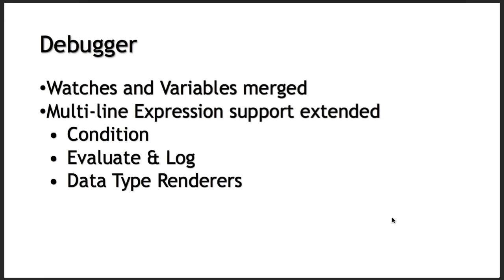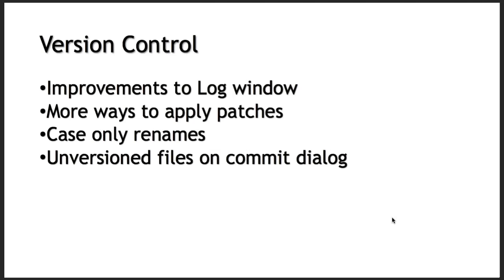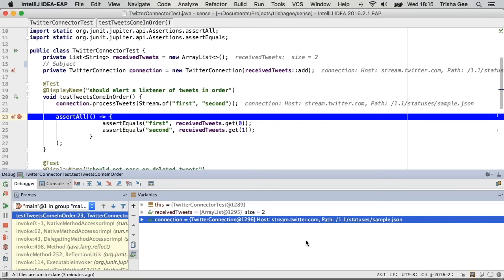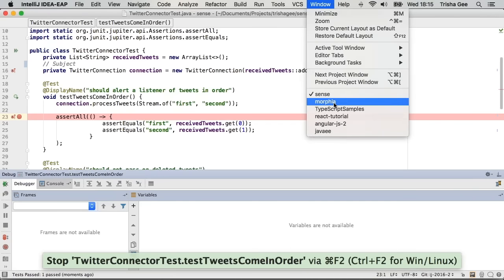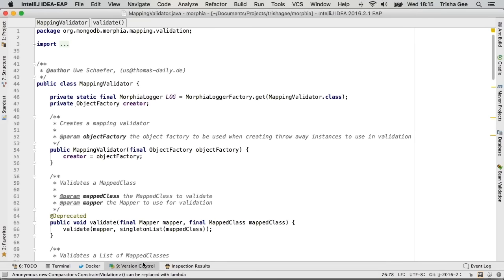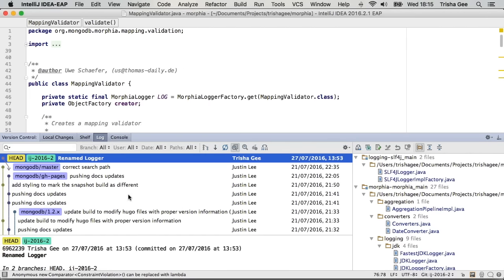Moving on to the changes to version control. There have been some nice changes to version control which are not a massive impact from the user's point of view, but just change the way you work a little bit. The log window has a number of improvements - the performance is just much, much better than it used to be. The changes get loaded in the background, and I find that the loading is much, much quicker.